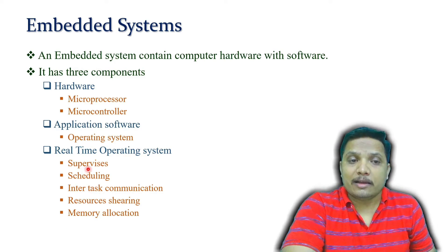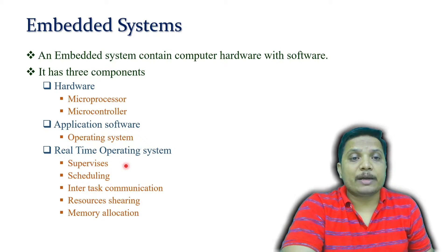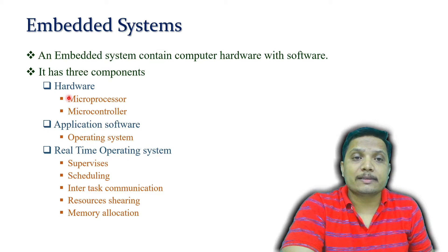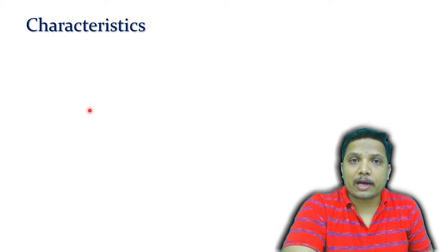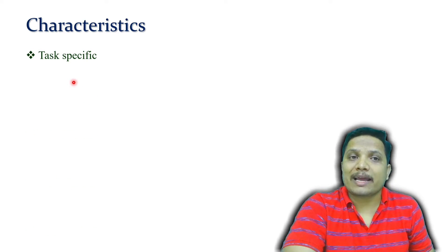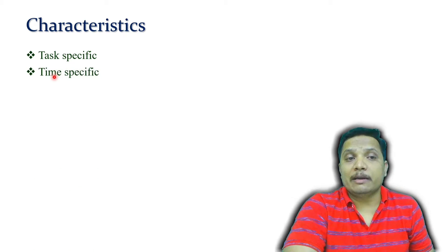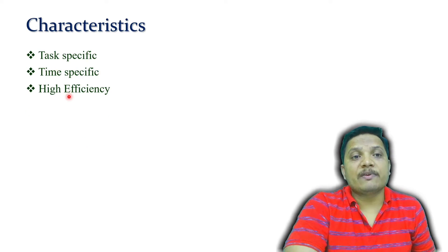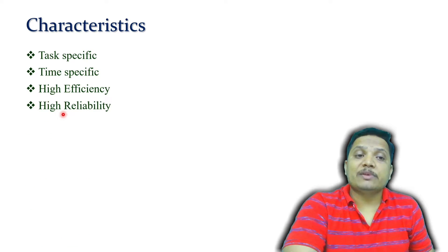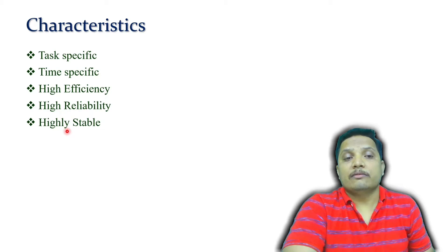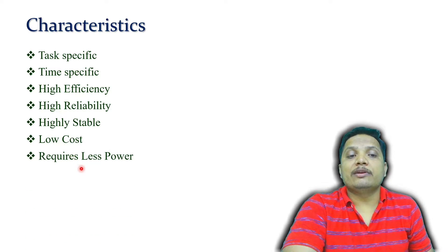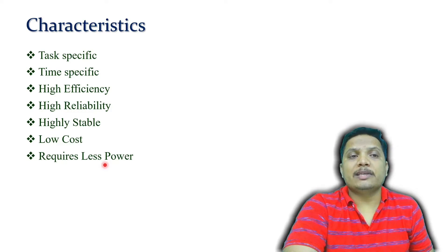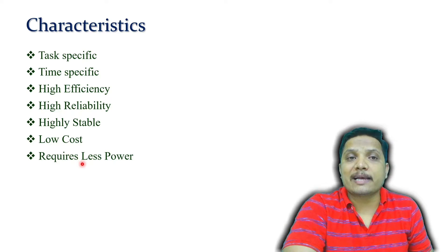These are the three very important components of an embedded system: hardware, application software, and real-time operating system. Now let us look at the different characteristics to focus on when designing an embedded system. An embedded system may be task-specific or time-specific. Sometimes we focus on efficiency and reliability. We need to see whether the system is stable, and very importantly, it should have lower cost and require less power.